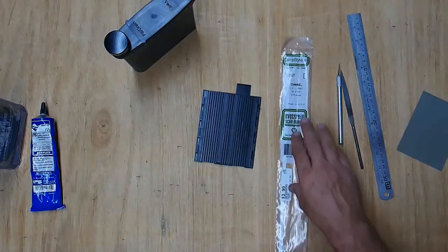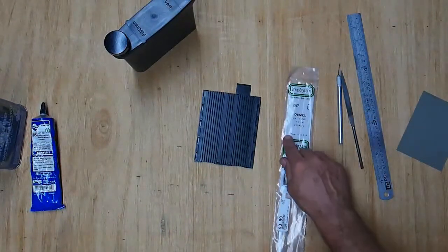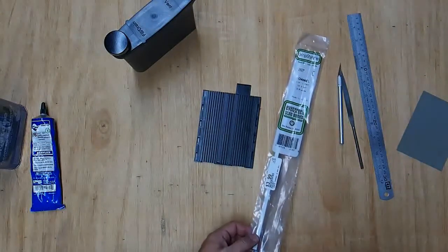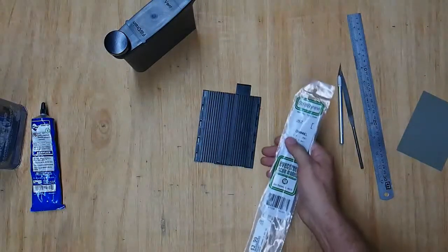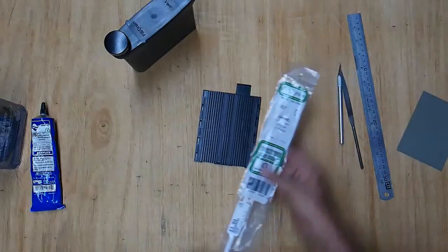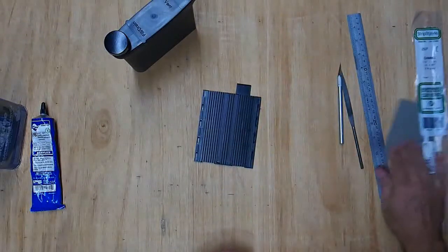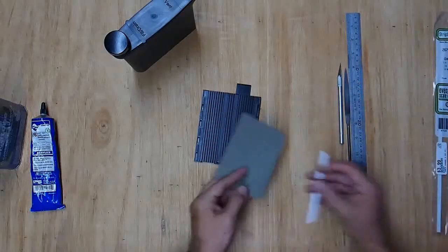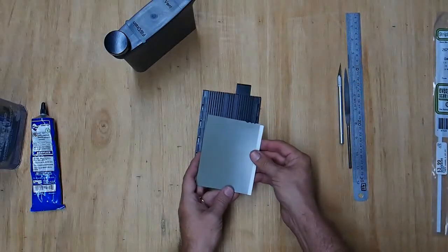Now head to your hobby shop and look for the architectural plastic. They use it for model railroads and architectural models. What I got was about a quarter of an inch in width. And cut a piece of that that is just a little bit shorter than your film.